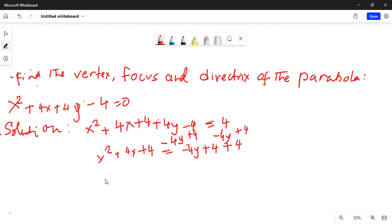Now this is a whole square, x plus 2 whole square, because this can be written as x square plus 2 times 2x plus 2 square is equal to minus 4.